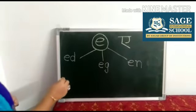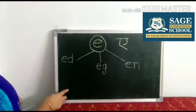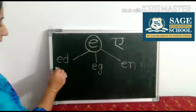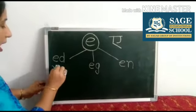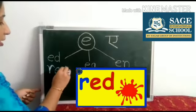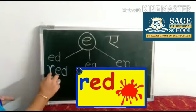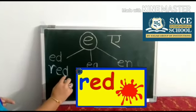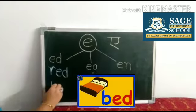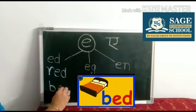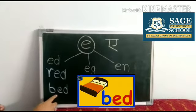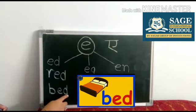Now we can make three letter words with these two letter words. Like R, E, D — Red. B, E, D — Bed.